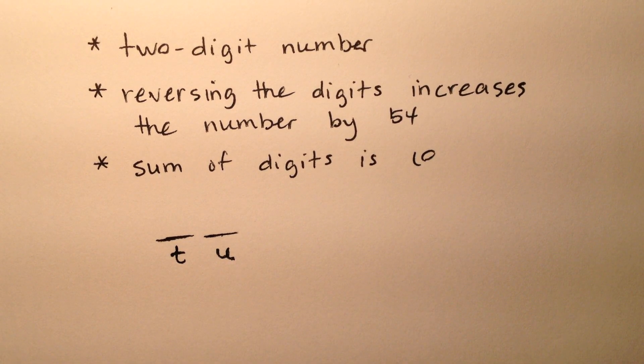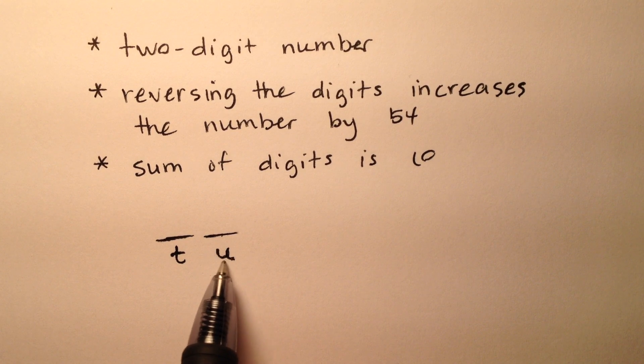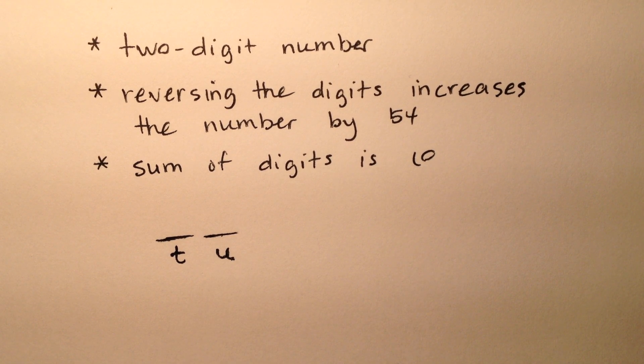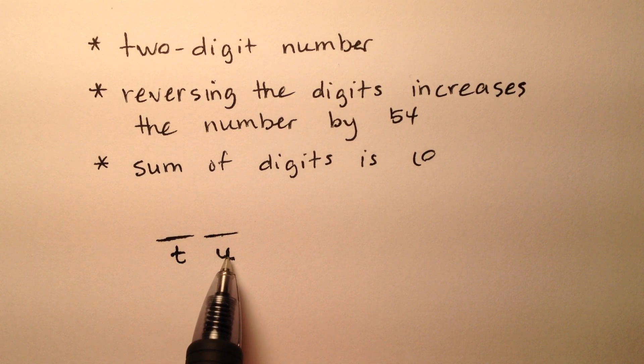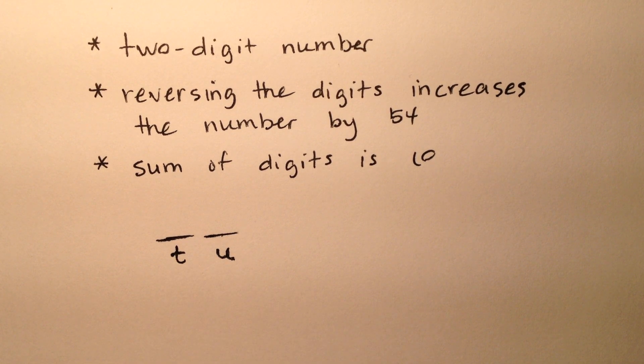Maybe T for tens and U for units, because I don't want to use an O for the ones place—O's look like zeros and we get ourselves in trouble. So we have the units place and the tens place.